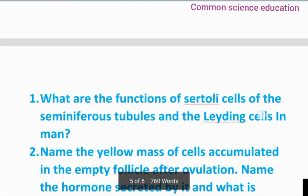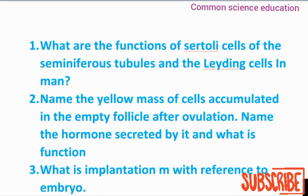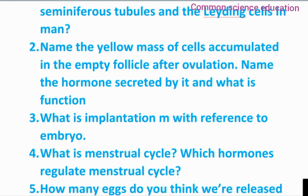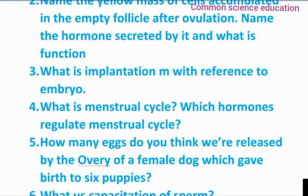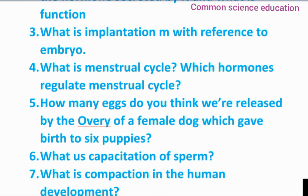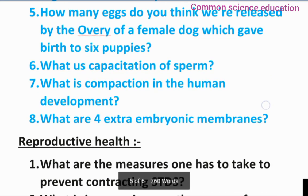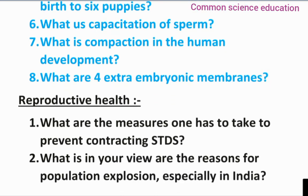Human reproductive system important questions: What are the functions of Sertoli cells of the seminiferous tubules and Leydig cells in man? Name the yellow mass of cells accumulated in the empty follicle after ovulation. Name the hormone secreted by it. What is its function? What is implantation with reference to the embryo? What is the menstrual cycle? Which hormone regulates the menstrual cycle? How many eggs were released by the ovary of a female dog which gave birth to two to six puppies? What is capacitation of sperm? What is compaction? In human development, what are the four extra-embryonic membranes?